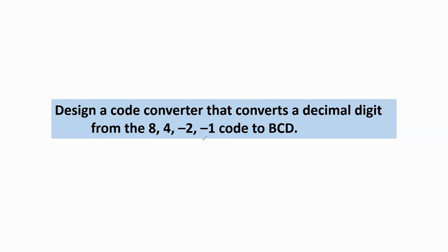Hello friends. In this video we will discuss the given problem: design a code converter that converts a decimal digit from the 8-4-minus2-minus1 code to BCD. We have to develop the circuit diagram for a code converter that converts a decimal digit — decimal digit means 10 digits — from 8-4-minus2-minus1 code to BCD, which means binary coded decimal.